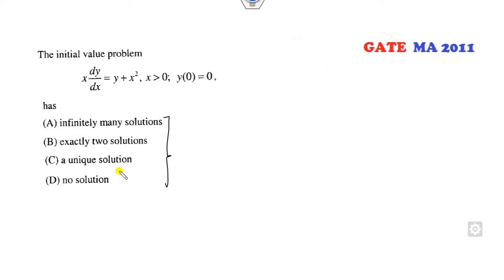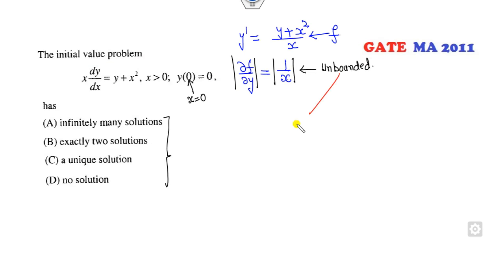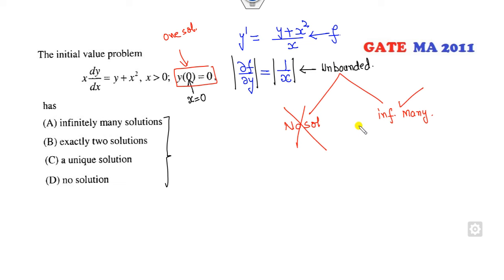Again, they are not asking you to solve. Find y dash first: it is y plus x squared over x. So f is this, and del f / del y is 1 over x. The initial value is x₀ equals 0. When x equals 0, this is unbounded. Once unbounded, there are two cases: no solution or infinitely many solutions. But one solution is already given, so no solution is cancelled. Only infinitely many solutions is the right answer.